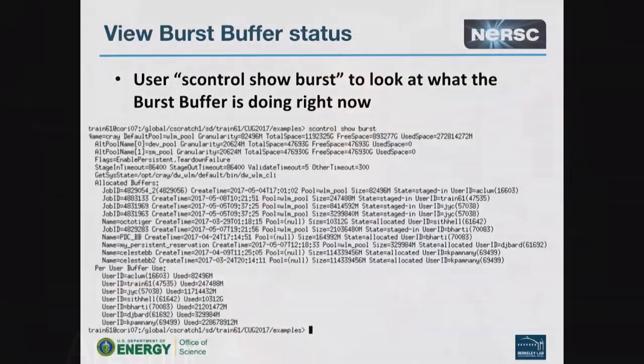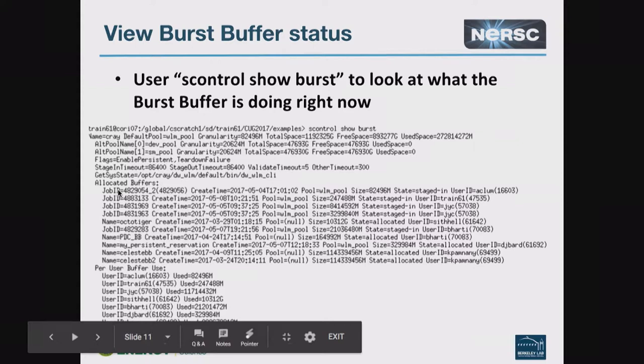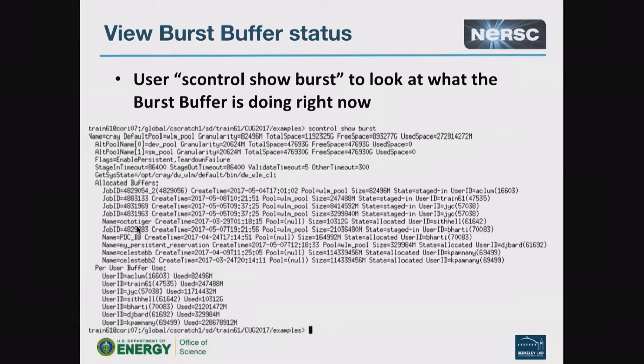Another command that is really fun to try is SControlShowBurst. SControlShowBurst gives you the status of the burst buffer — it tells you all the different allocations that exist on there. You'll see some have a name that's a job ID; those are people with a scratch allocation. Some have a name — that's for a persistent allocation, which you have to name. It's kind of fun: you can see what people are doing with the burst buffer, how much space they have, and how long they've had it.